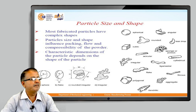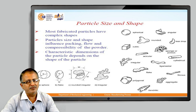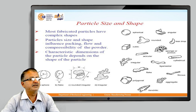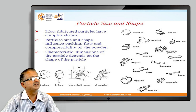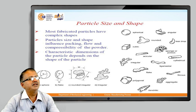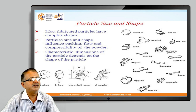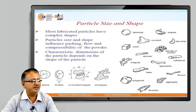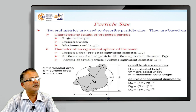Particle size and shape influence packing, flow and compressibility of the powder. Various shapes include spherical, flake, rounded, irregular, angular, cubic, cylindrical, irregular flakes, fibrous, polygonal, and dendritic. The characteristic dimensions of a particle depend upon its shape, which is why particle size and shape play a very crucial role in powder metallurgy. Particle size is based on the characteristic length of the projected particle and the diameter of an equivalent sphere. Possible size measures are projected height h, projected width w, and maximum chord length m, which together give the equivalent spherical diameter.